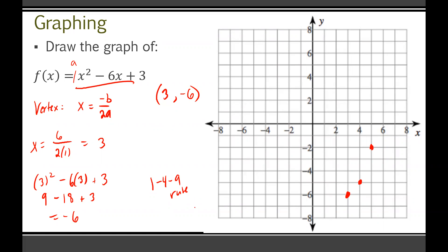For the '9' part of the 1-4-9 rule: go back to your vertex, over 3 points, and up 9 times A. 9 times 1 equals 9, so that's up 9 points. If you're feeling bold, the 1-4-9 rule can be extended to a 1-4-9-16 rule — going over 4 points and up 16. But 16 above negative 6 would take us off the chart, so we won't worry about that. Once you have your 1-4-9 points, make it symmetrical by mirroring each dot on the other side of the vertex.